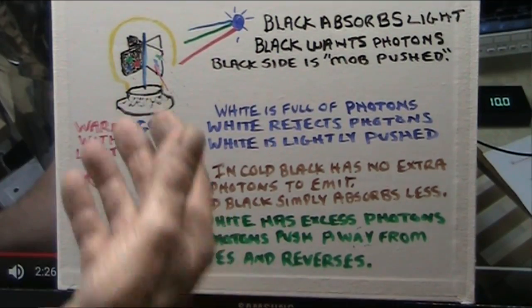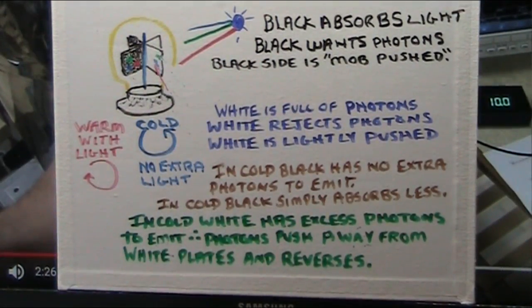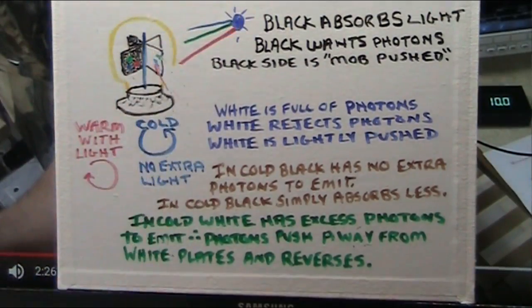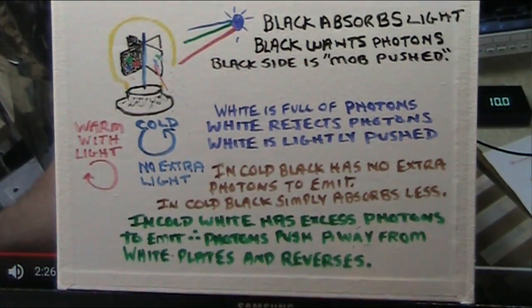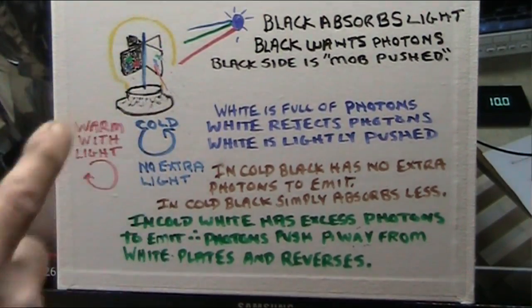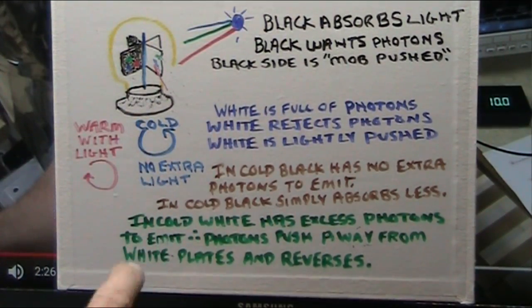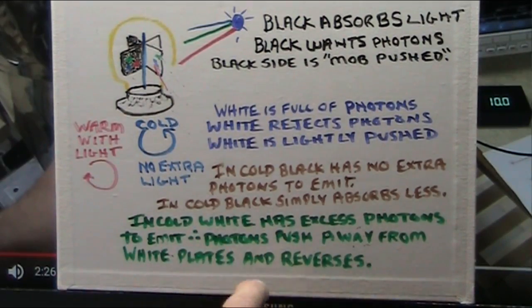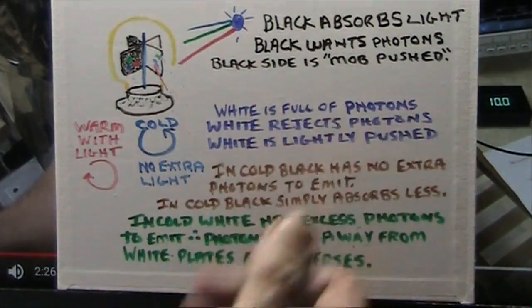So, now, you've got the white shooting out photons because it had a whole bunch. And, the cold says, I'd like to have some. And, it says, okay, pling, pling, pling. It shoots them out into the cold. The white starts to turn. Only in the cold. No extra light. If you shine light on it, it would stop it. I guarantee you. In the cold, white has excess photons. It has excess photons in the cold. It's always had a lot of excess photons. So, in the cold, it says, alright, if you want some, I will emit some. And, therefore, the photons push away from the white plates and reverse. It's as simple as that. It's not a big thing to figure this out.